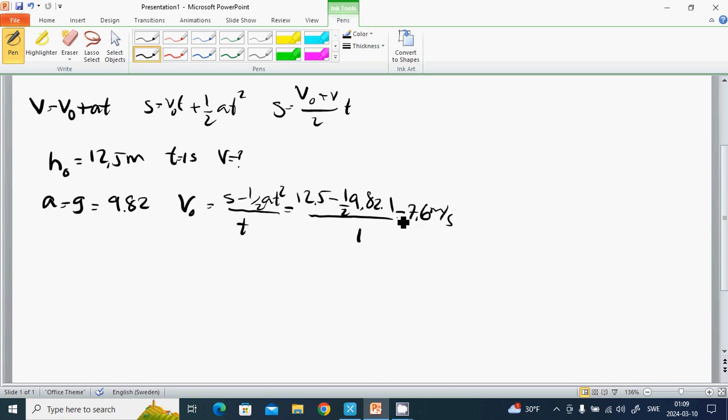Then we cast up the stone with this velocity. And V is V₀ plus gT, which is 7.6 plus 9.82 times one, which is 17.4 meters per second.